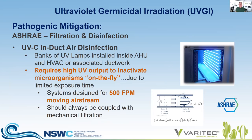ASHRAE's Epidemic Task Force states that banks of UV lamps installed inside air handlers or associated ductwork is certainly a recommendation. However, using UV light in an on-the-fly application requires more UV dosage than simply keeping surfaces in the direct line of sight of a UV generator free of microorganisms. General design considerations: best if you can maintain velocity of about 500 feet per minute or less. We can design for higher velocities up to 1,000 feet per minute, but the faster the air, the higher the dosage required. This is a calculation that can be effectively applied once we know the design parameters.